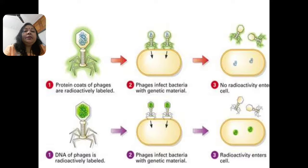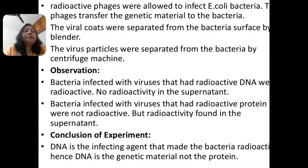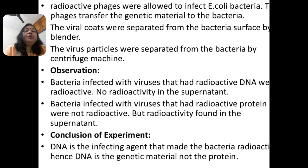Here is the picture of the slide. You can see the first step — infection — where the radioactive viruses were allowed to infect the bacteria. The phages transferred their genetic material to the bacterial host cell. Then the viral coats were separated from the bacterial surface using the blender, and the virus particles were separated from the bacteria by centrifuge machine.